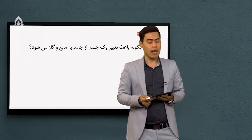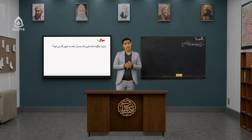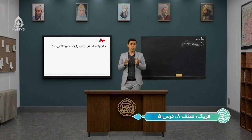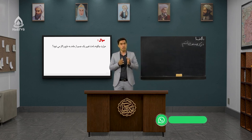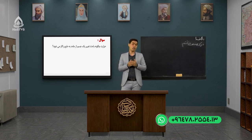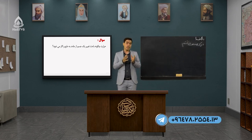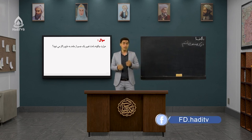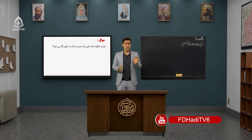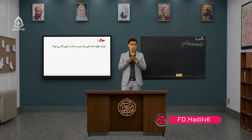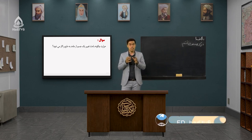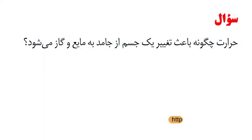ما تغییر فازها رو با هم بررسی کردیم. حالا می‌خوایم به یک سوال پاسخ بدیم: حرارت چگونه باعث تغییر یک جسم از جامد به مایع و به گاز میشه؟ ساختار مواد و حالت‌های مواد رو بررسی کردیم. در یک جسم جامد، مولکول‌ها کنار هم قرار گرفتن، یک پیوند محکم و مستحکم بین مولکول‌ها وجود داره، مولکول‌ها سر جای خودشان فقط یک حرکت ارتعازی دارن، حرکت انتقالی ندارن، و بنابراین جسم جامد شکل و حجم معینی داره.